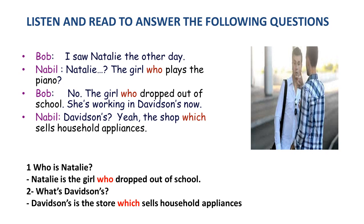Have you finished? Let's have a look at the right answers. Number one: Nathalie is the girl who dropped out of school. Do you have the right answer? Very good. Number two: Davidson's is the store which sells household appliances. Do you have the right answer? Great, all of you.